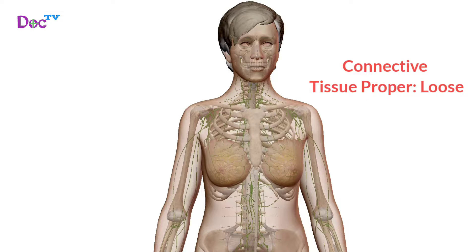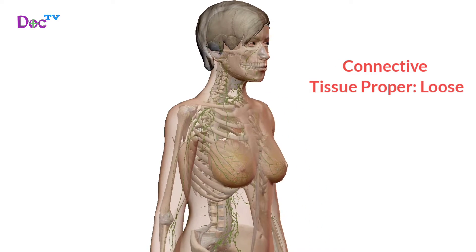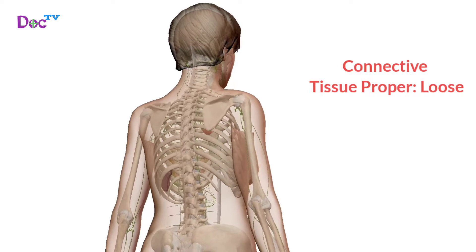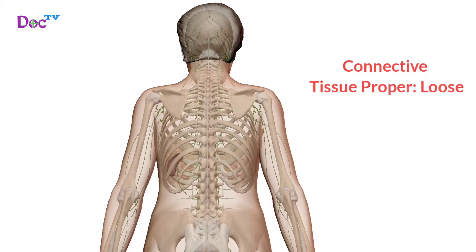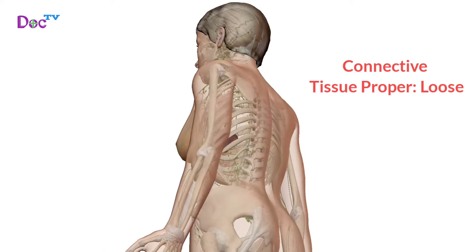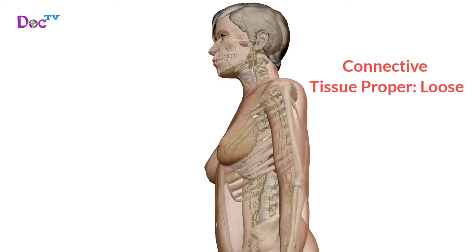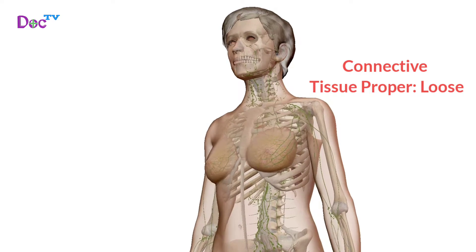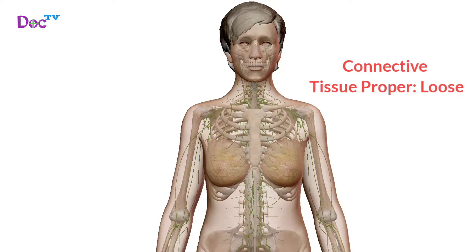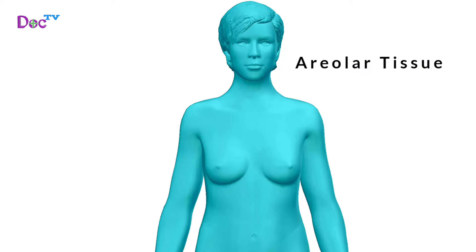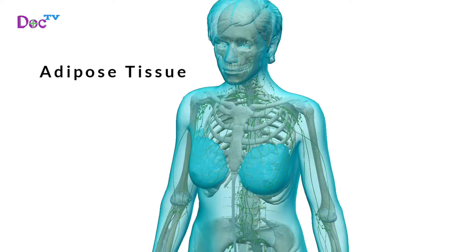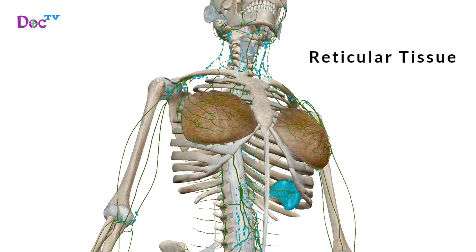Connective tissue proper can be classified as loose connective tissue or dense connective tissue depending on how its fibers are arranged. Loose connective tissue is characterized by its loosely arranged fibers and abundant ground substance. This structure allows it to cushion and protect body organs. There are three types of loose connective tissue: areolar tissue, adipose tissue, and reticular tissue.